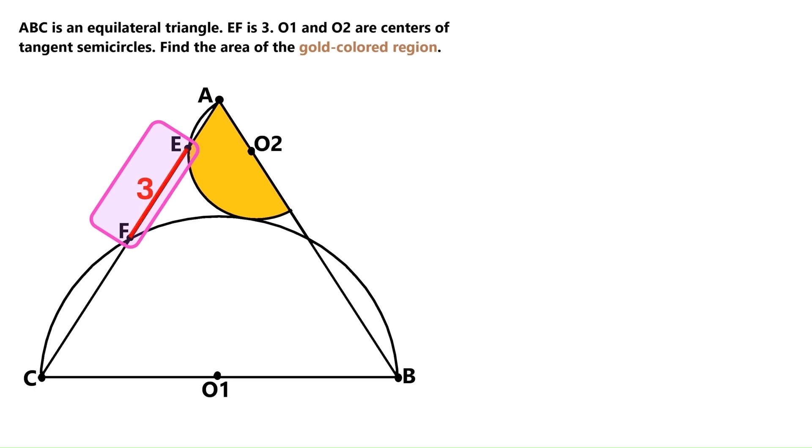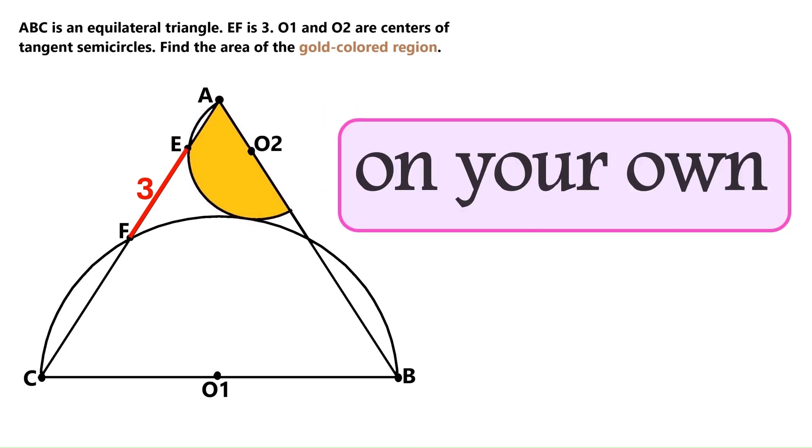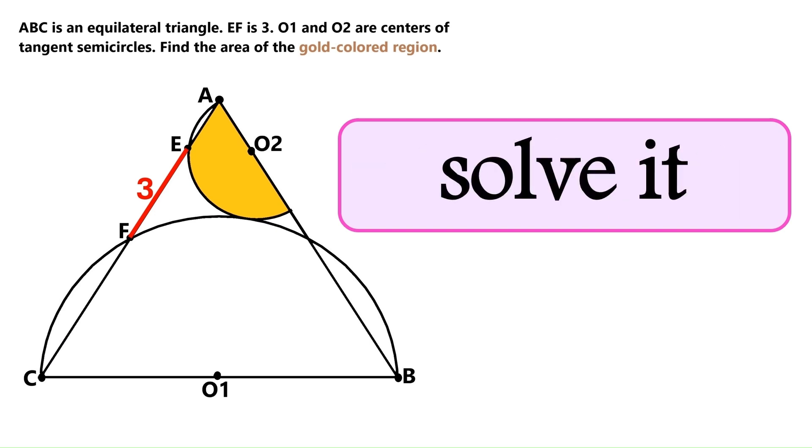We only know that this segment EF is 3, and we need to find this gold-colored area, which is part of this semicircle, but this tiny region over here is missing. If you want to try this on your own, now is the time to pause the video, because I'm starting to solve it right now.